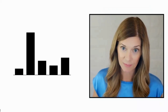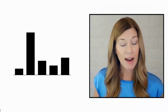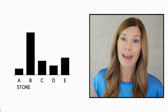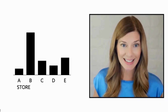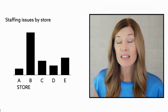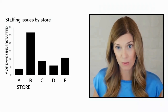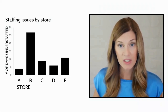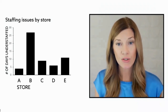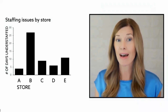Let's look at how these bars might be used in a specific scenario. Imagine you work for a regional grocery chain that has five stores — we'll call them A, B, C, D, and E. The chain has been having staffing issues across all of their stores. This bar chart shows the number of days each store has been understaffed in the past month.